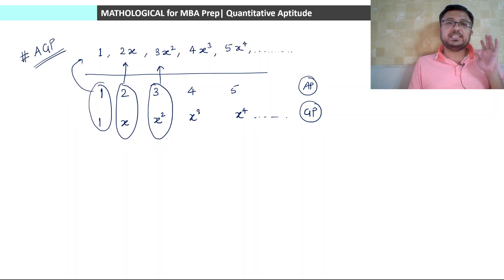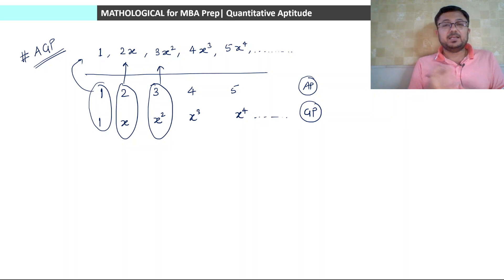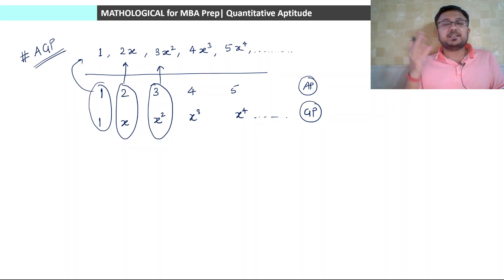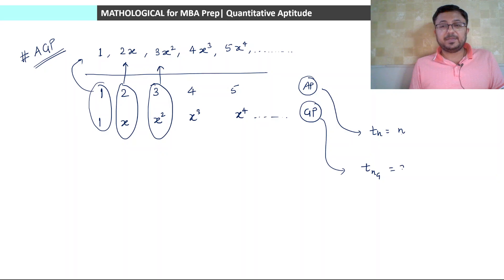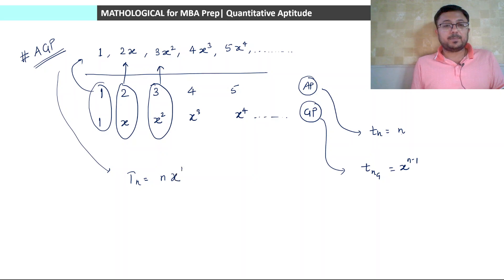For the general term, if we find out this particular AGP, we find the AP nth term and GP nth term and their product gives the AGP nth term. In this case, the AP nth term will be equal to n only, and the GP nth term will be x^(n−1). So the nth term of this AGP will be equal to n × x^(n−1).